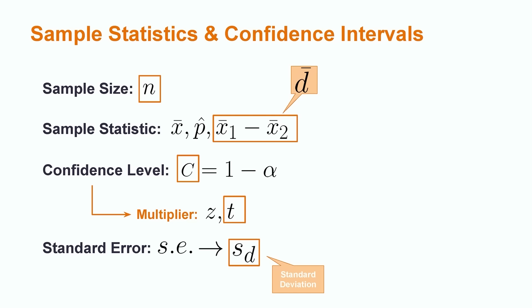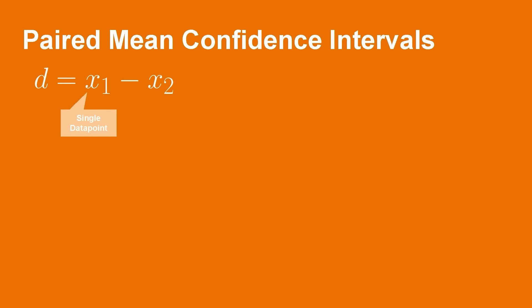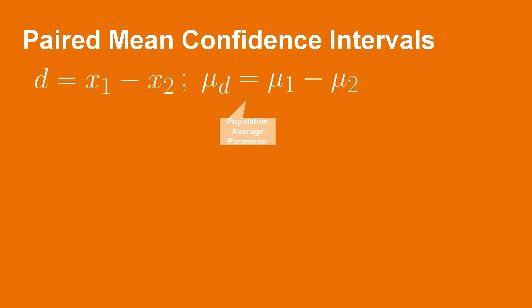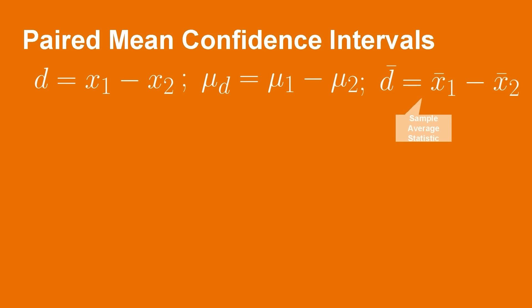Let's take a look at the specific equations for this confidence interval. First, let's clarify the notation we will be using throughout this lesson. The notation for the single difference data point, d, is equal to x1 minus x2. The notation for the population parameter of the mean difference is mu_d equals mu1 minus mu2. The notation for the sample statistic for the mean difference is d bar equal to x bar 1 minus x bar 2.